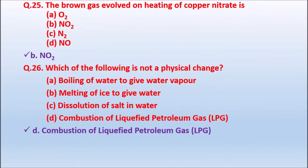Question 25: The brown gas evolved on heating of copper nitrate is — Option A: oxygen; Option B: nitrogen dioxide; Option C: nitrogen (N₂); Option D: nitrous oxide. The correct answer is nitrogen dioxide (NO₂).